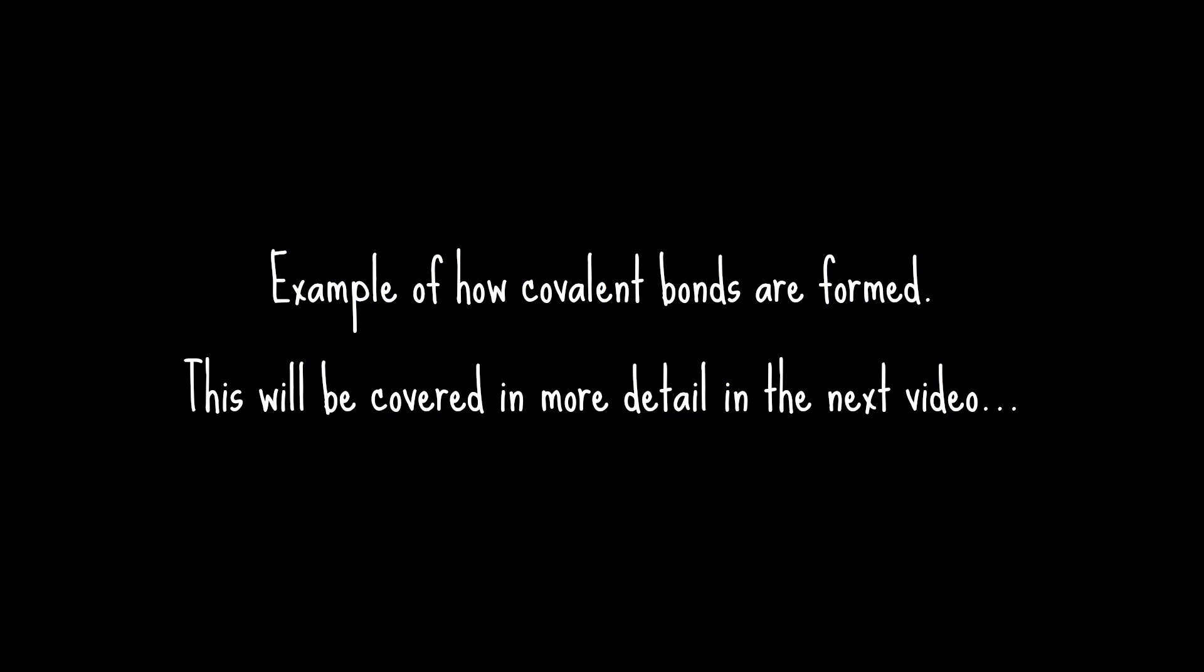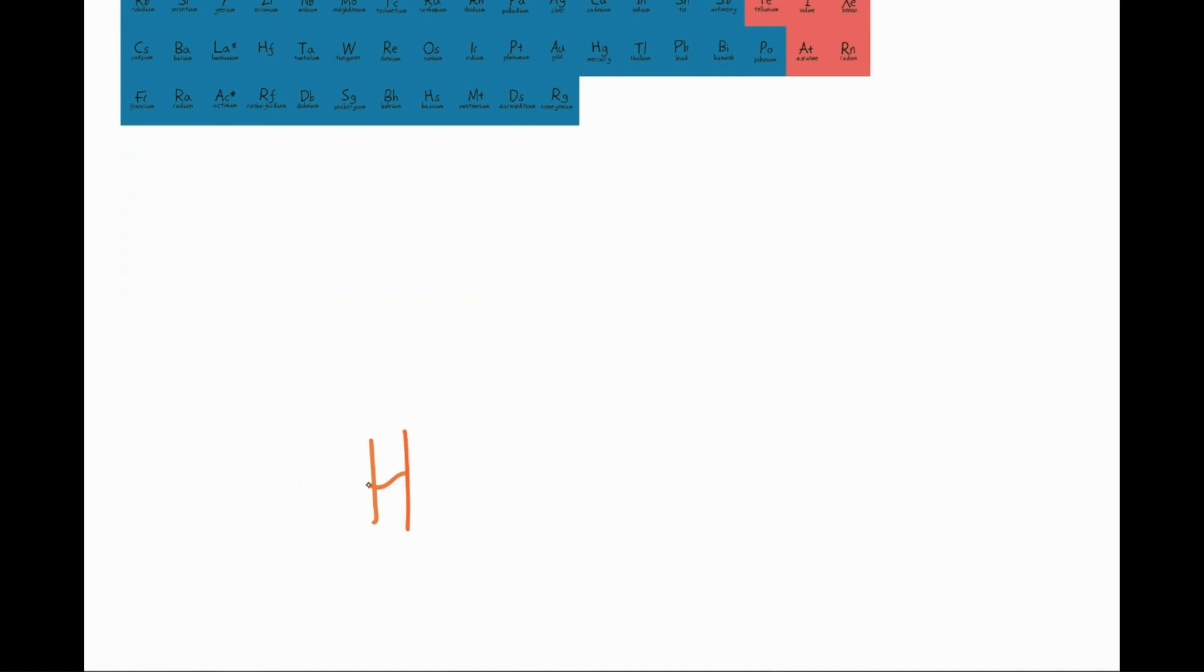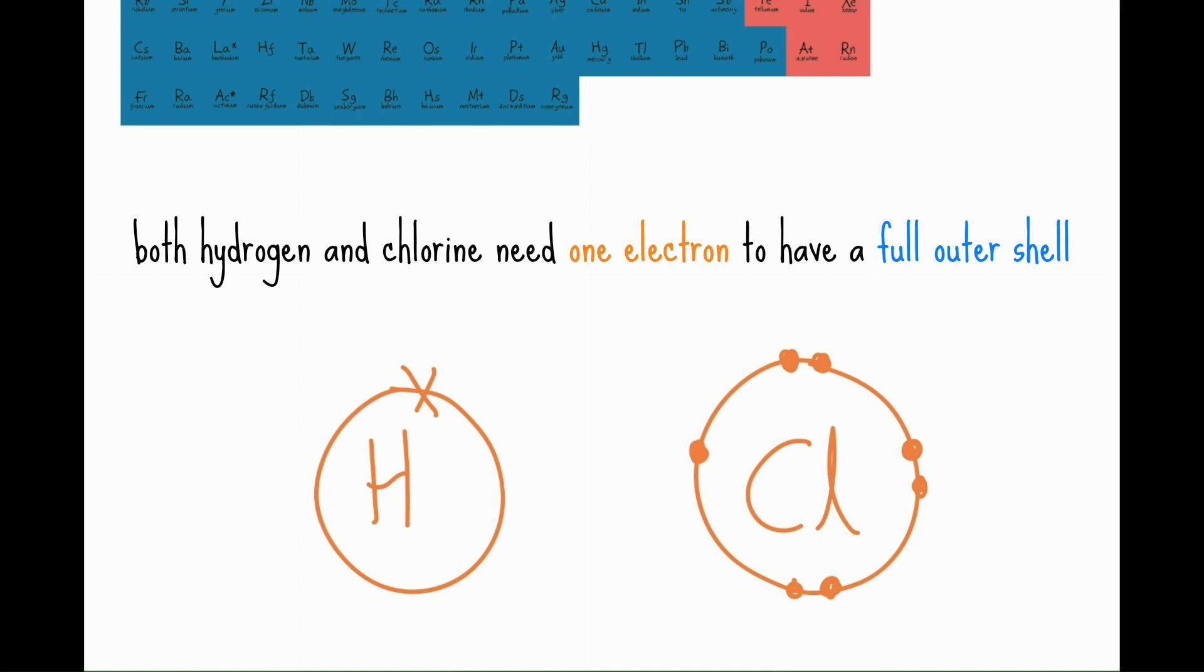So I'll give you an example of a covalent bond. Here is a hydrogen atom and hydrogen has one electron in its outer shell. Here is a chlorine atom. Chlorine has seven electrons in its outer shell which I'm representing with dots. Hydrogen's electron I'm representing with a cross. So both of these atoms need an electron each to have a full outer shell.